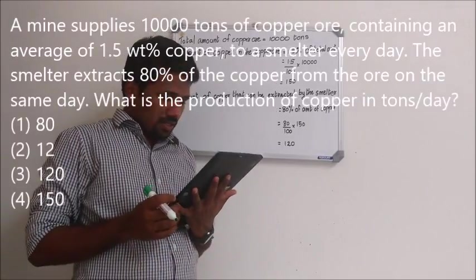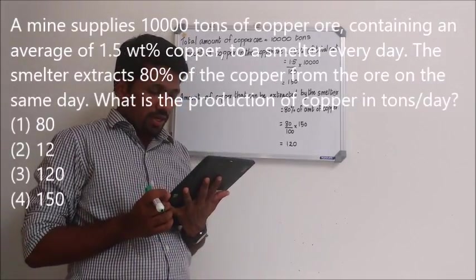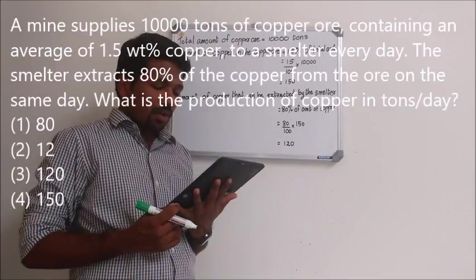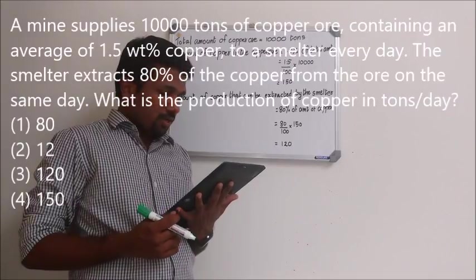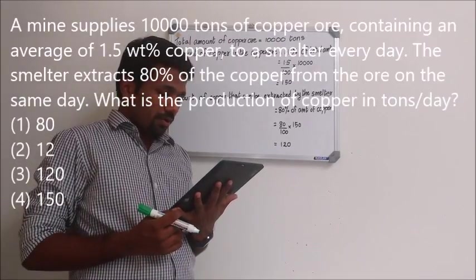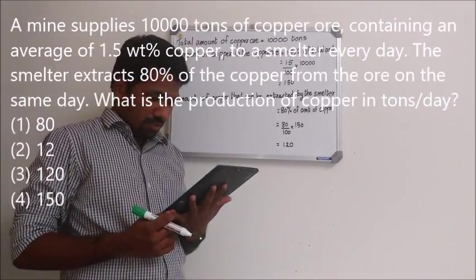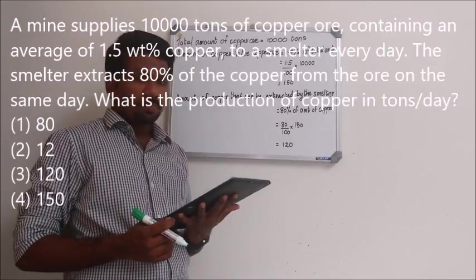A mine supplies 10,000 tons of copper ore containing an average of 1.58% copper to a smelter every day. The smelter extracts 80% of the copper from the ore on the same day. What is the production of copper in tons per day?